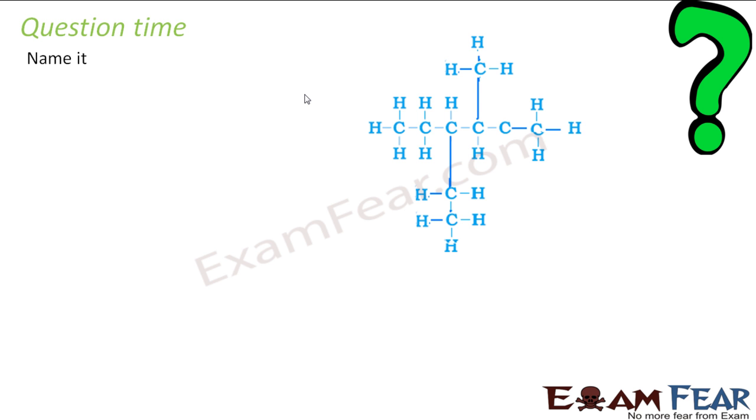Name this one again. So let us find the longest chain. The longest chain will be these, correct. This is my longest chain. And I have one methyl group, one ethyl group, correct. Let us name it one, two, three, four, five, six. One option, that is option A. So if we go by this, I will name ethyl first because ethyl comes before methyl in ascending order, because E comes before M.